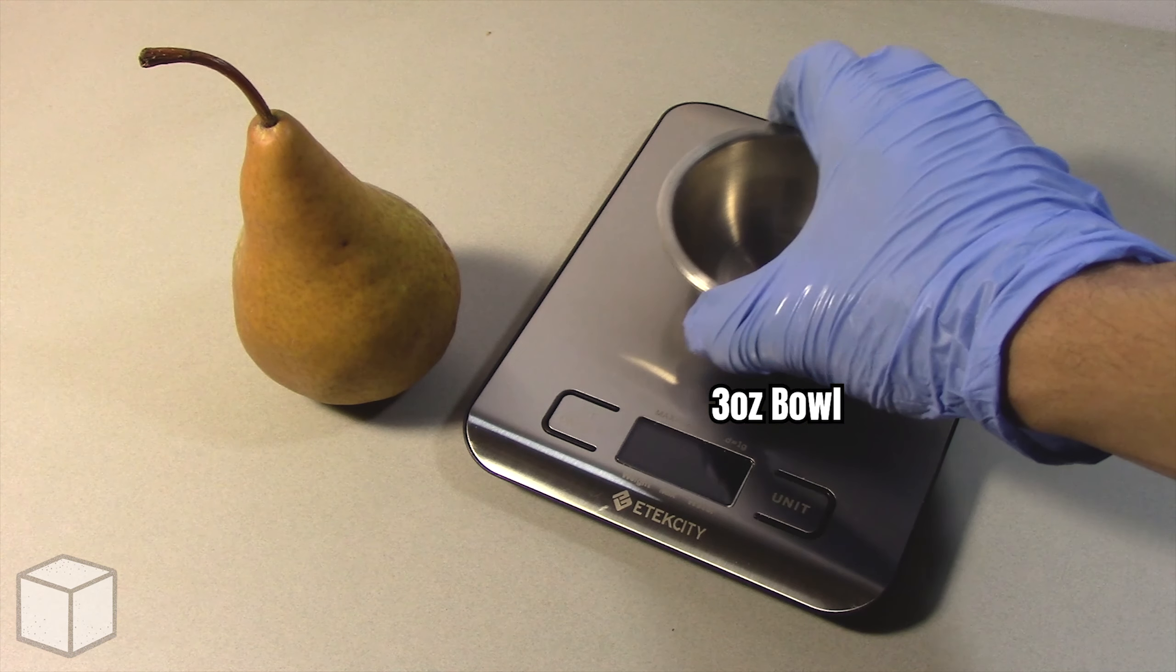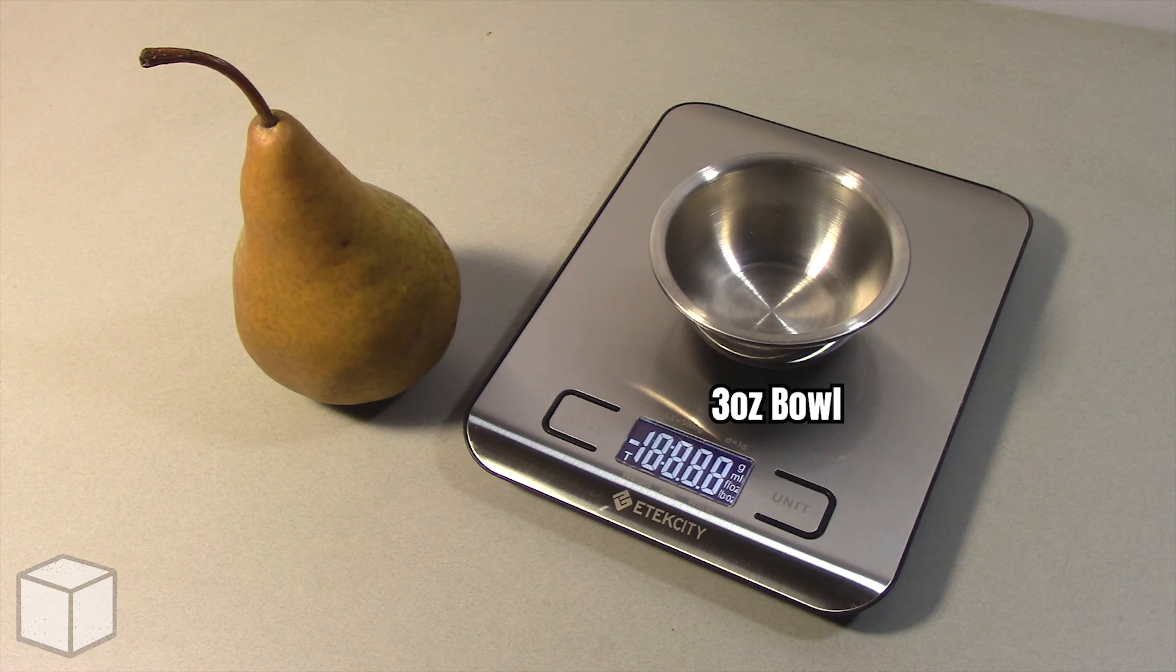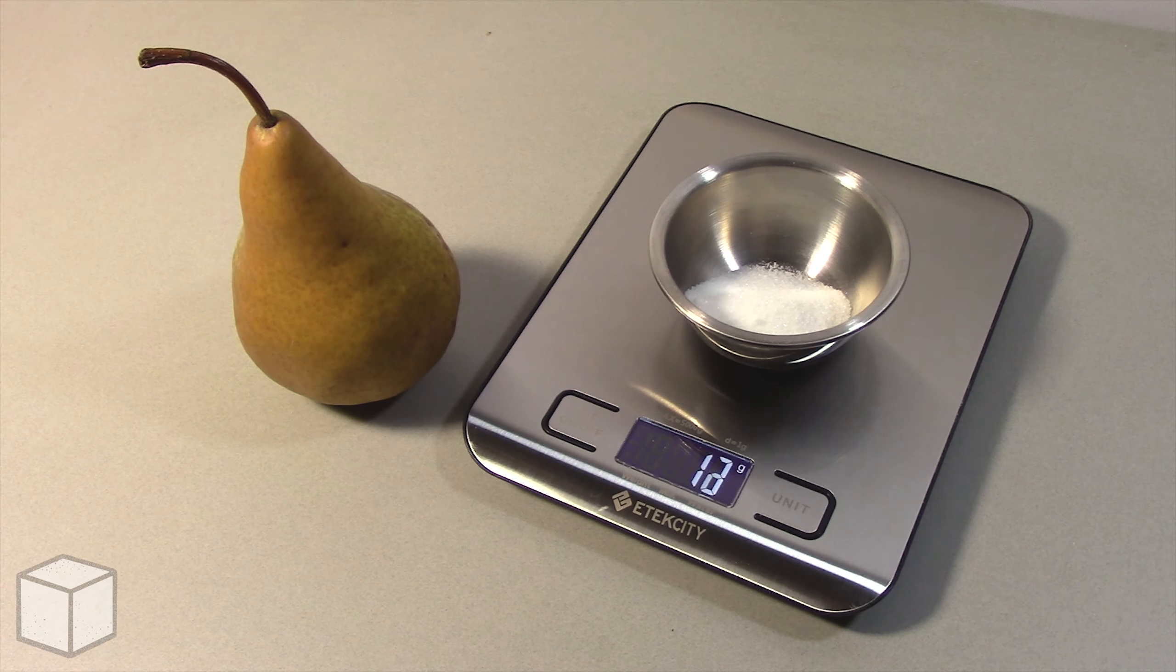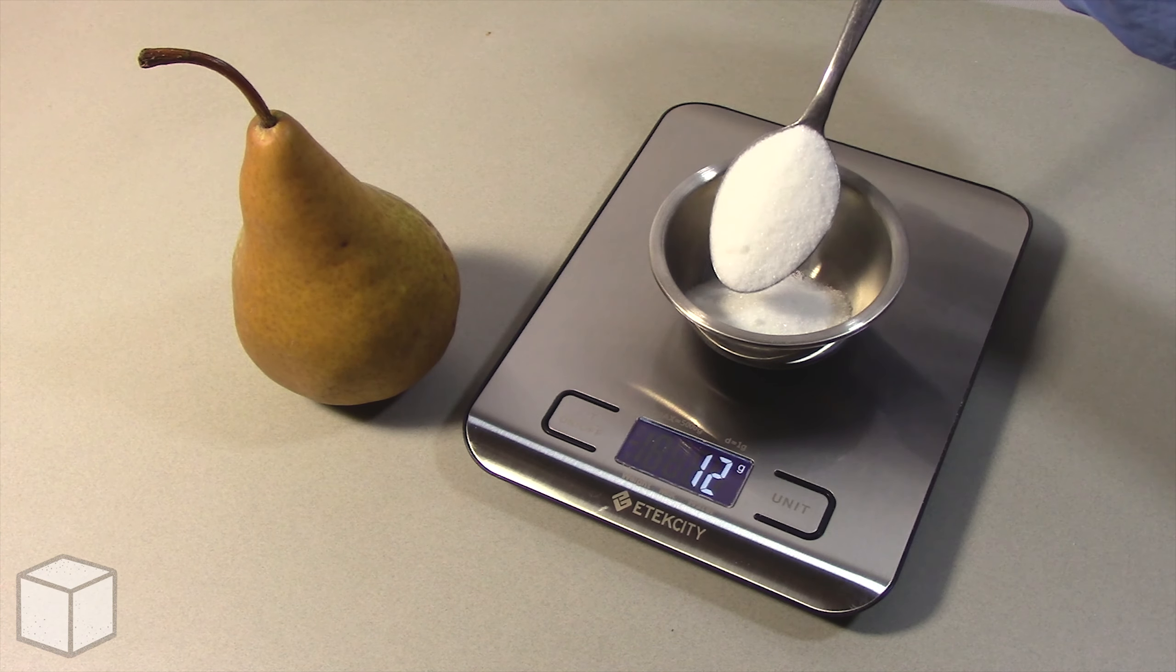To provide a visual of what that looks like, with this food scale I'm going to add granulated sugar into this small 3 ounce bowl until the total amount is equal to 17 grams.